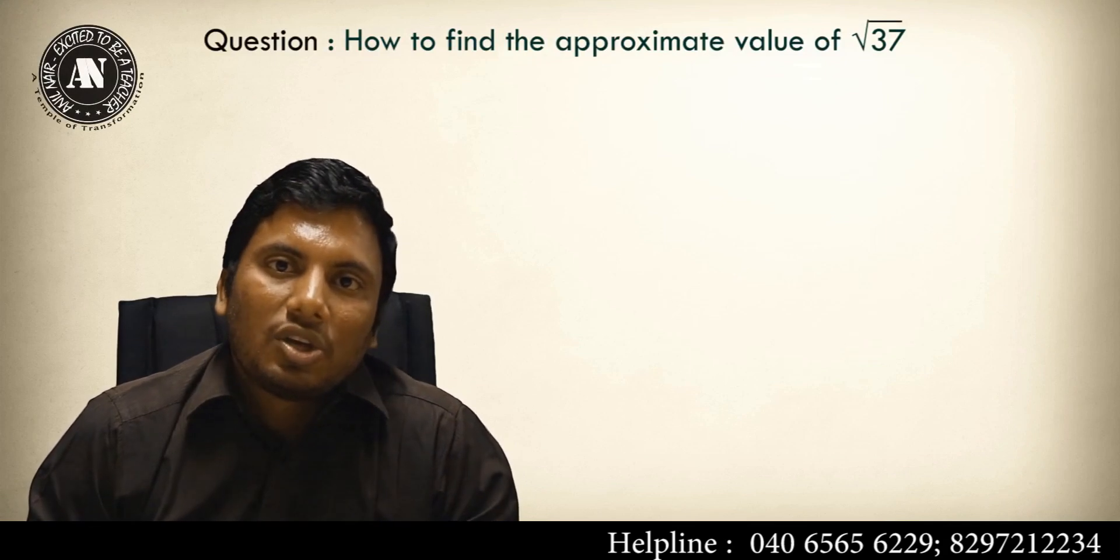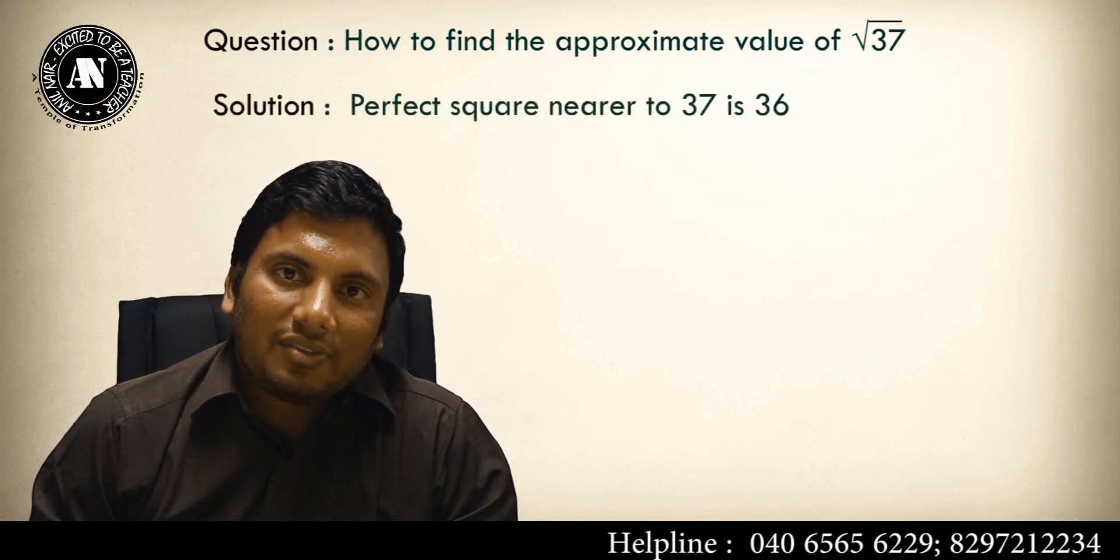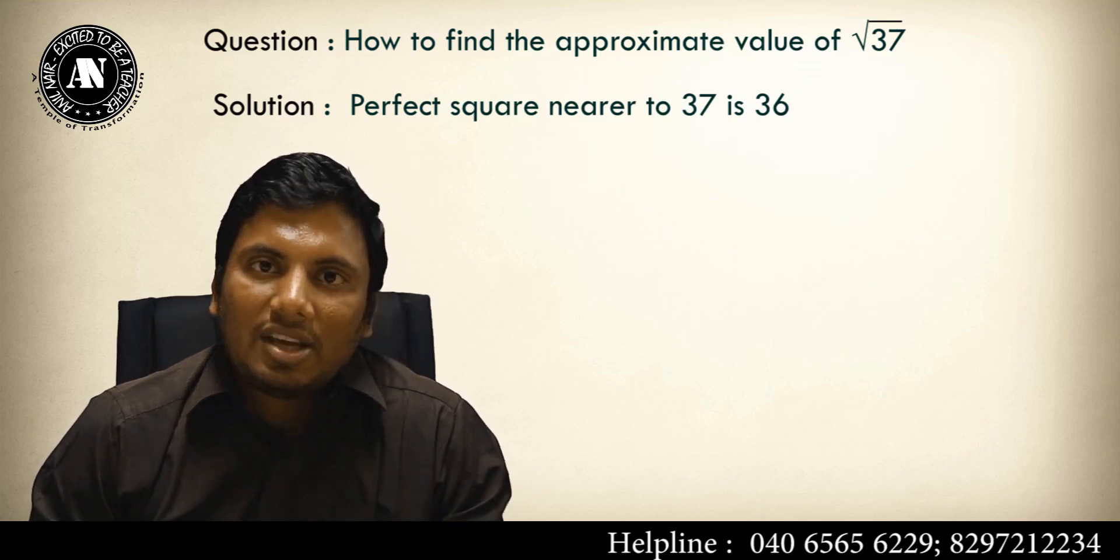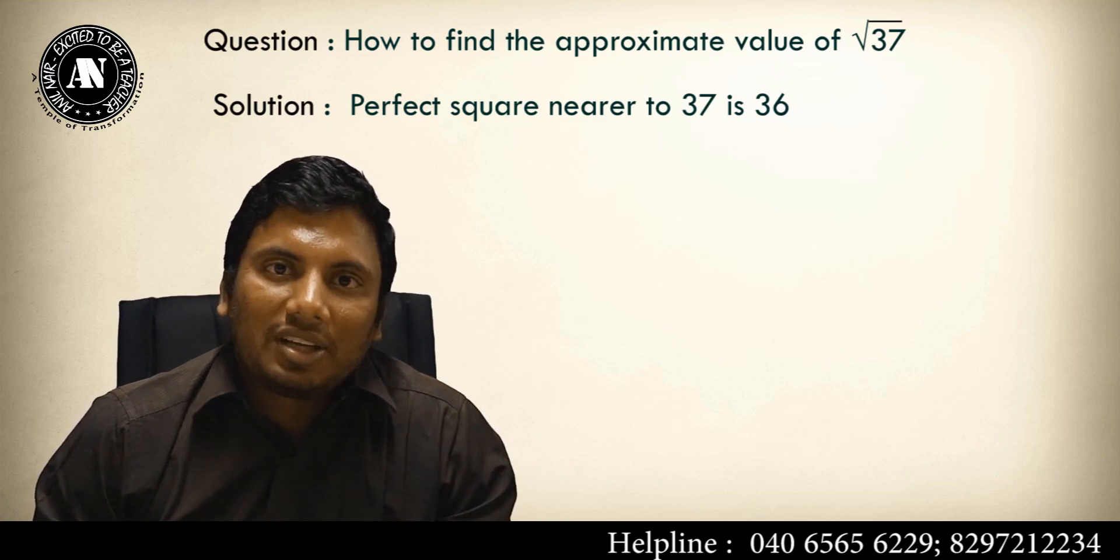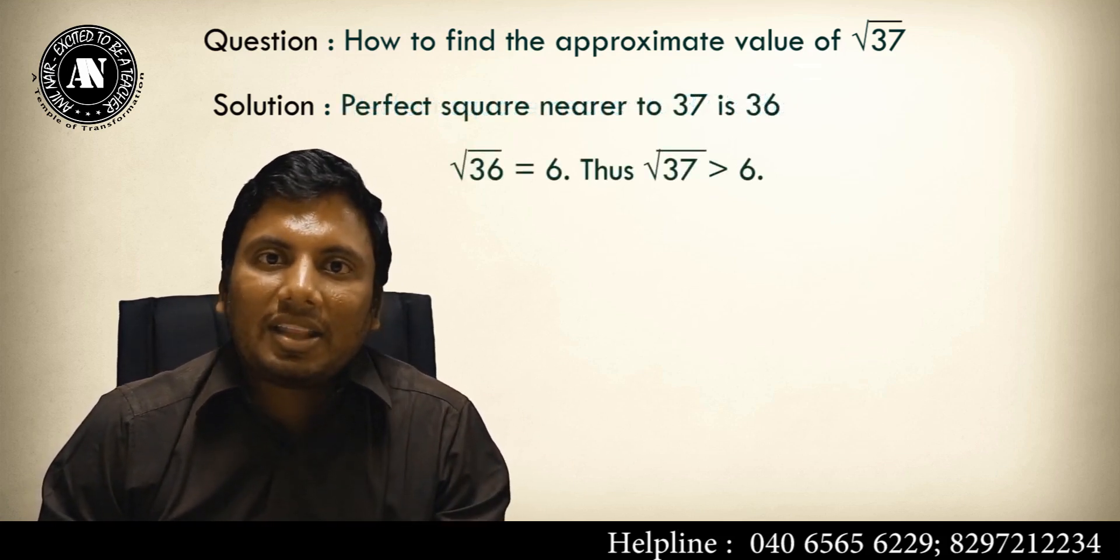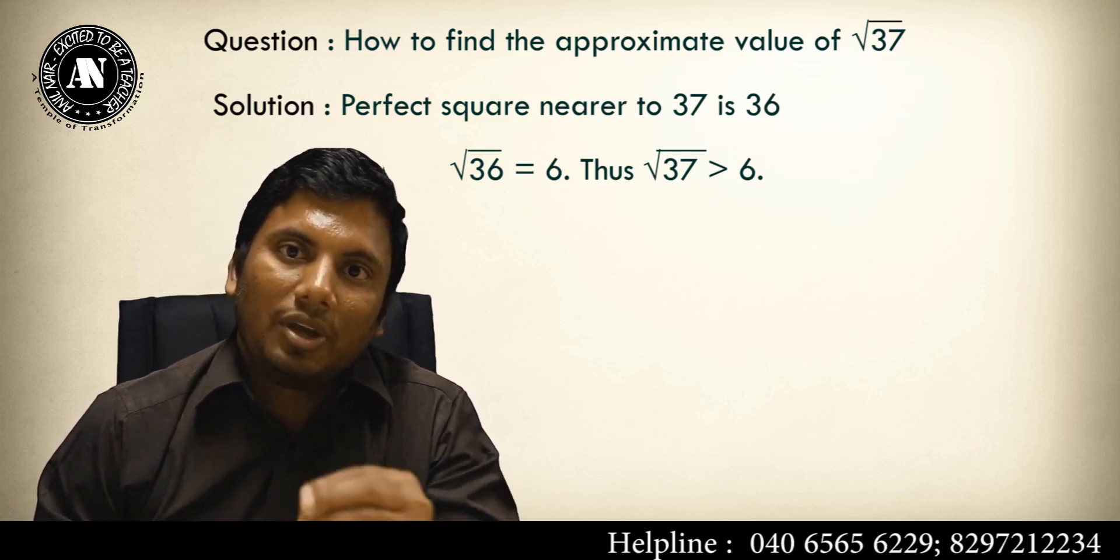Question: how to find the approximate value of square root of 37? Step number 1: square root of 37, what is the nearest perfect square nearer to 37? 36. So first write down square root of 36. Square root of 36 is 6, so answer will be definitely greater than 6. What is that value beyond 6, we will determine.